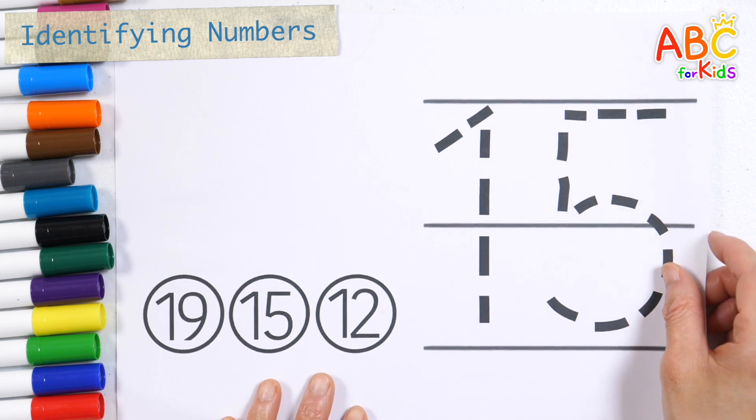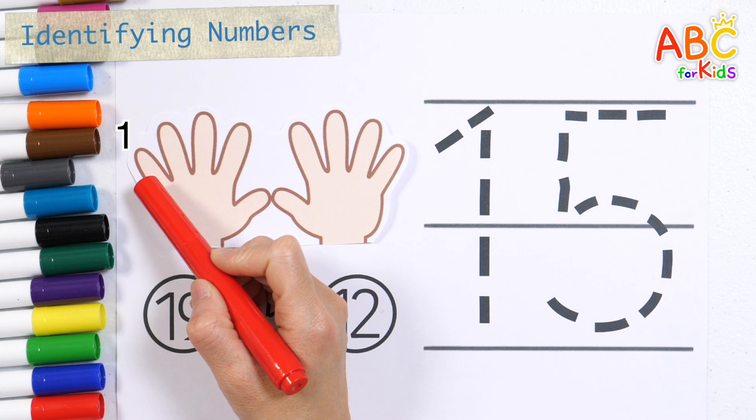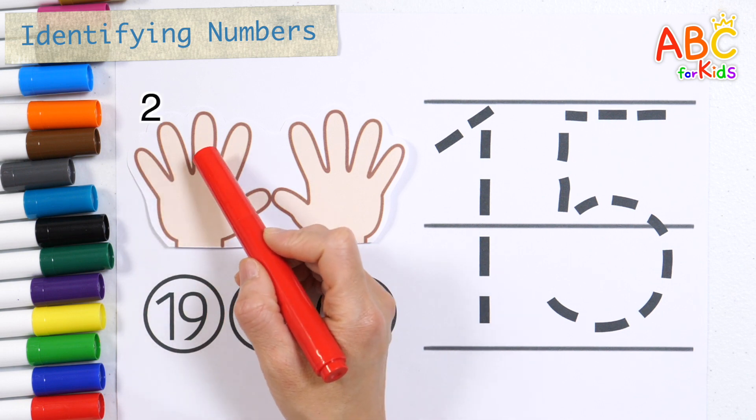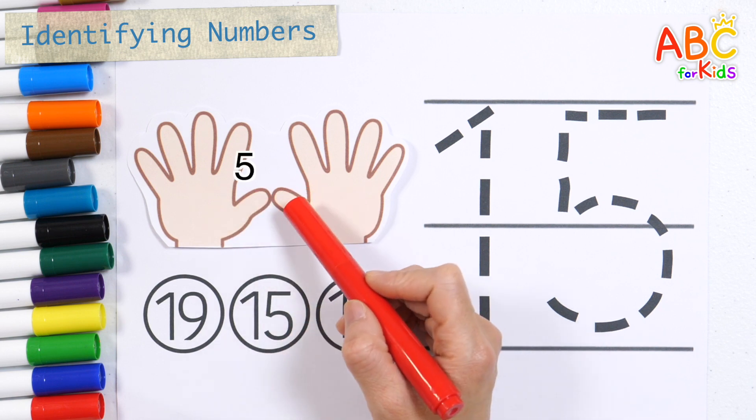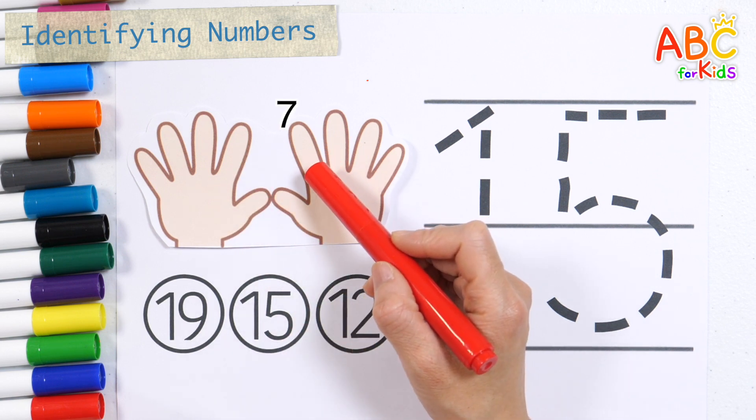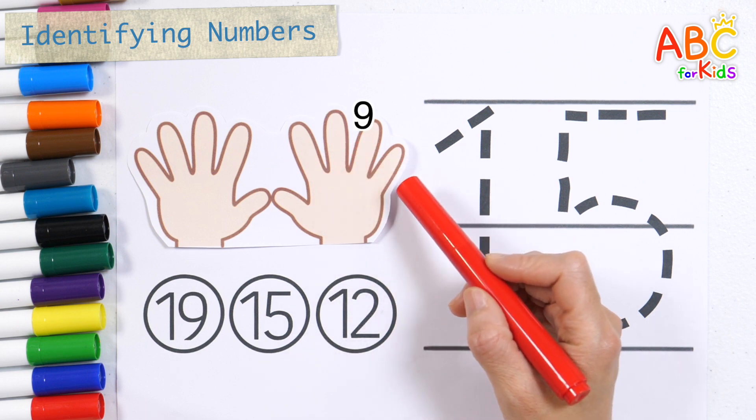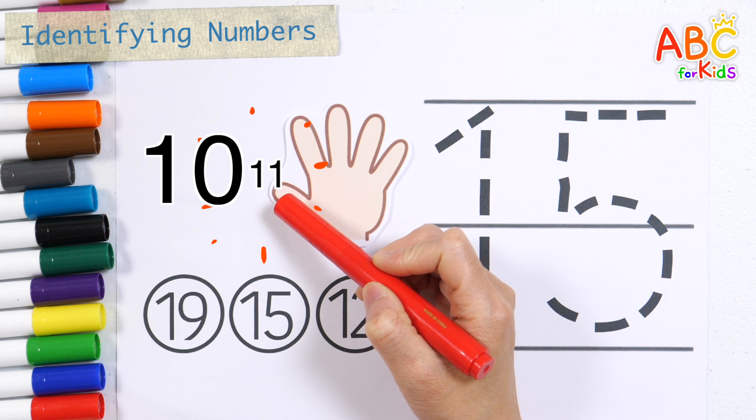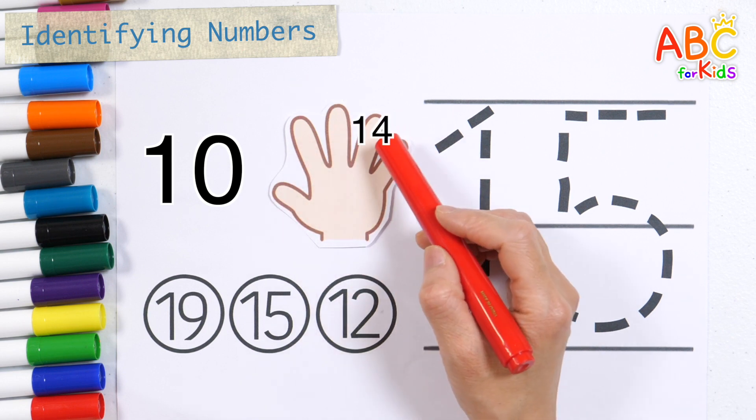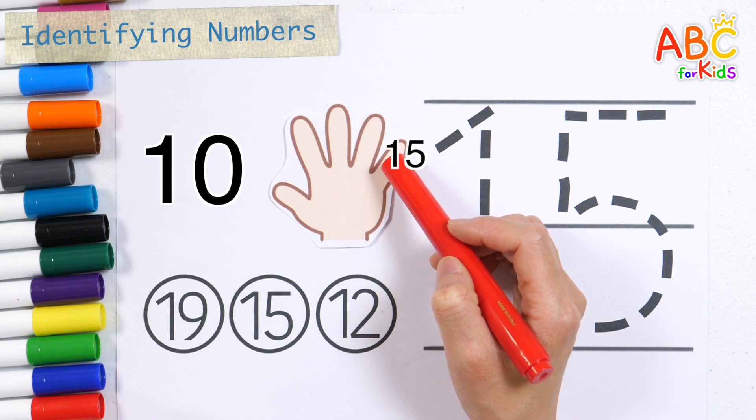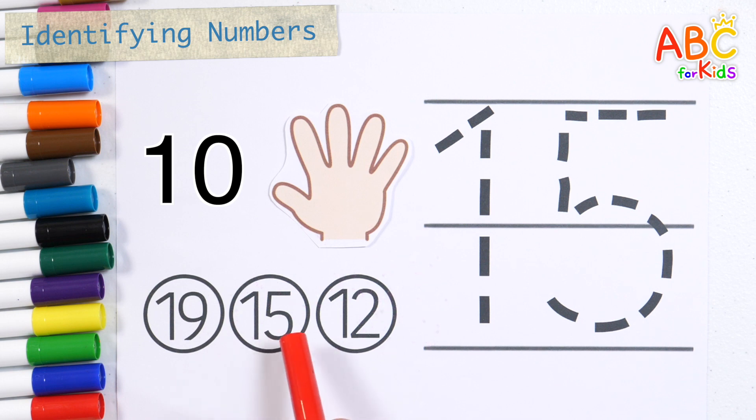Learn the number 15 by counting on your fingers. 1, 2, 3, 4, 5, 6, 7, 8, 9, 10, 11, 12, 13, 14, 15. Find the correct number in the circle and color it with a red pen.